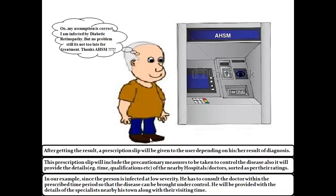After getting the result, a prescription slip will be given to the user depending on their result of diagnosis. This prescription slip will include the precautionary measures to be taken to control the disease. Also, it will provide details such as time, qualifications, etc., of the nearby hospitals and doctors sorted as per their ratings. In our example, since the person is infected at low severity, he has to consult a doctor within the prescribed time period so that the disease can be brought under control. He will be provided with details of the specialists nearby his town along with their visiting time.